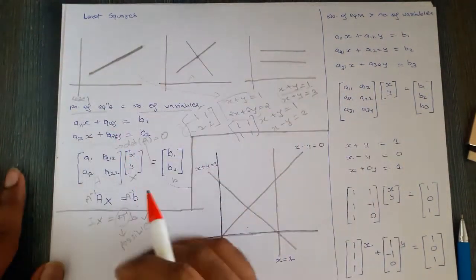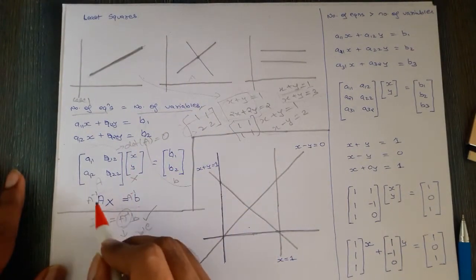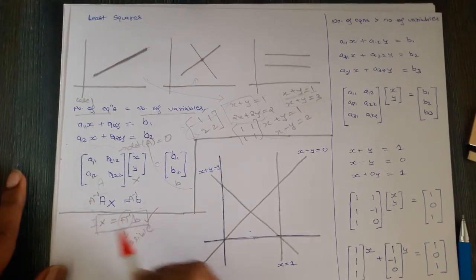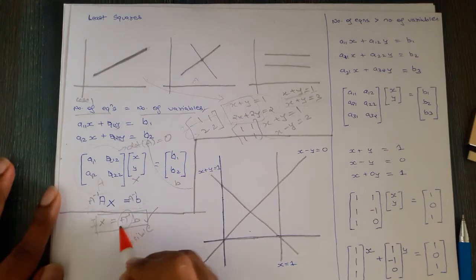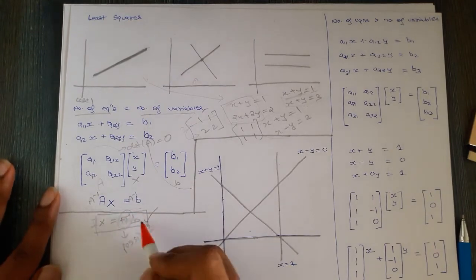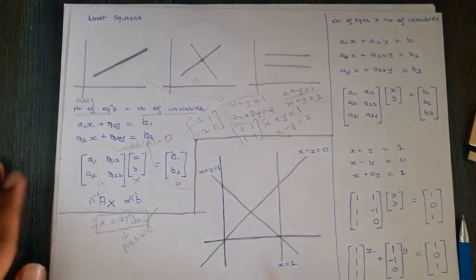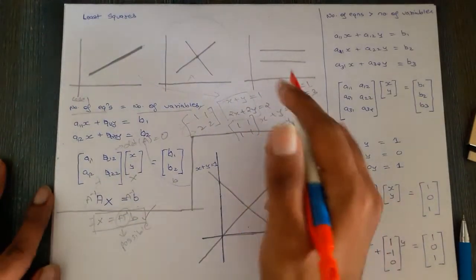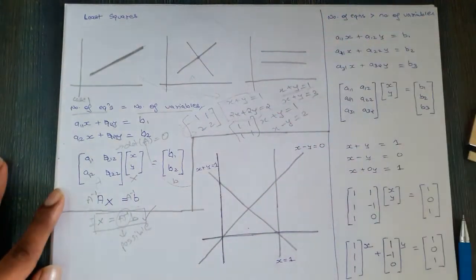That was the case when the number of equations equals the number of variables. In that situation, only for the unique intersection case can you get the solution x = A⁻¹b.